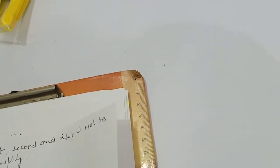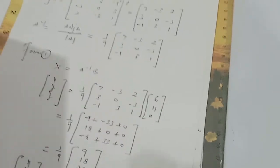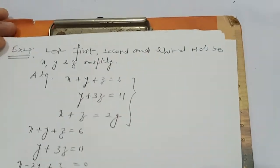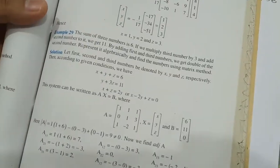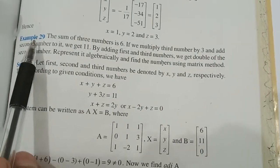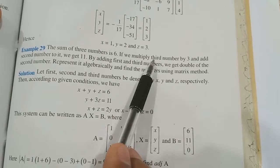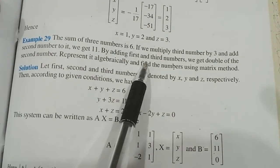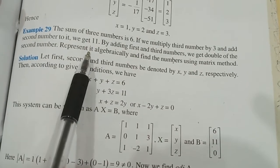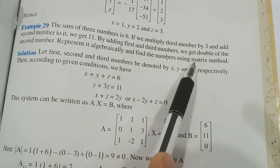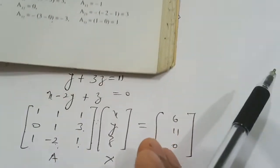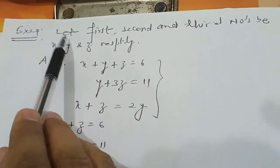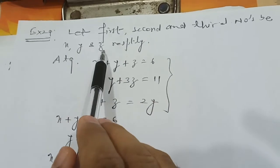Similarly, example number 28 in our textbook is the same as example 27 but in three variables. Now here is example number 29: the sum of three numbers is 6; if we multiply the third number by 3 and add the second number to it we get 11; by adding the first and third number we get double the second number. Let the first, second, and third numbers be x, y, and z respectively.